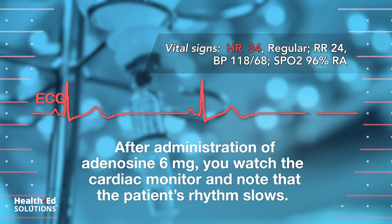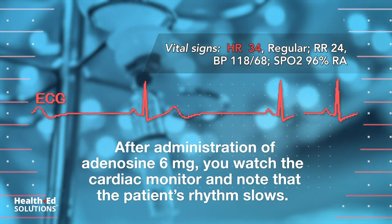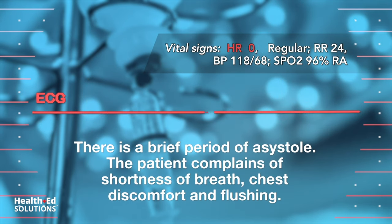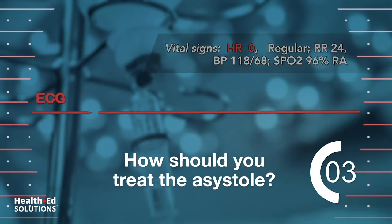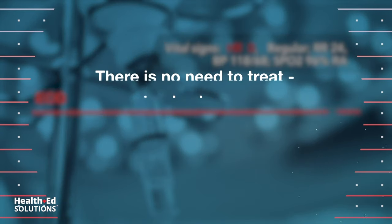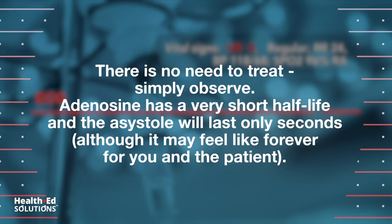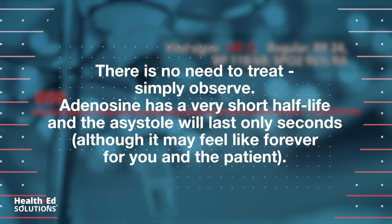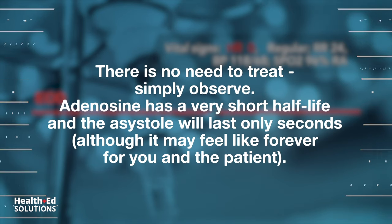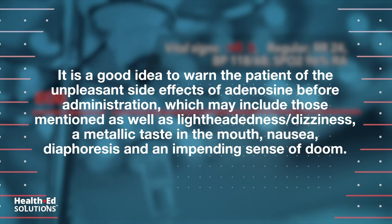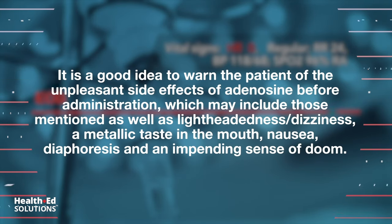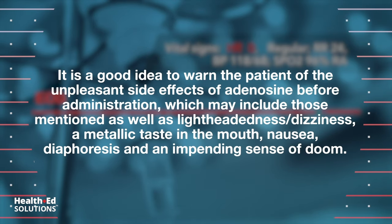After administration of adenosine 6 mg, you watch the cardiac monitor and note that the patient's rhythm slows. There is a brief period of asystole. The patient complains of shortness of breath, chest discomfort, and flushing. There is no need to treat the asystole — simply observe. Adenosine has a very short half-life and the asystole will last only seconds. It is a good idea to warn the patient beforehand of the unpleasant side effects, which may include those mentioned, as well as lightheadedness or dizziness, a metallic taste in the mouth, nausea, diaphoresis, and an impending sense of doom.